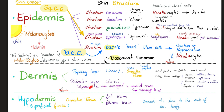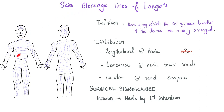Look at this reticular layer — collagenous bundles arranged in parallel rows. This is what gives us cleavage lines. And here are the cleavage lines, front versus back. They look like this — these are lines along which the collagenous bundles of the dermis, especially the dense reticular layer, are mainly arranged.